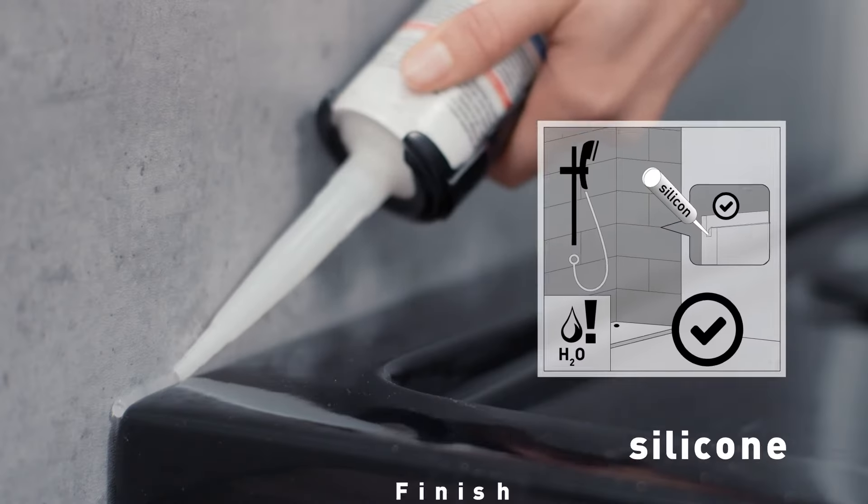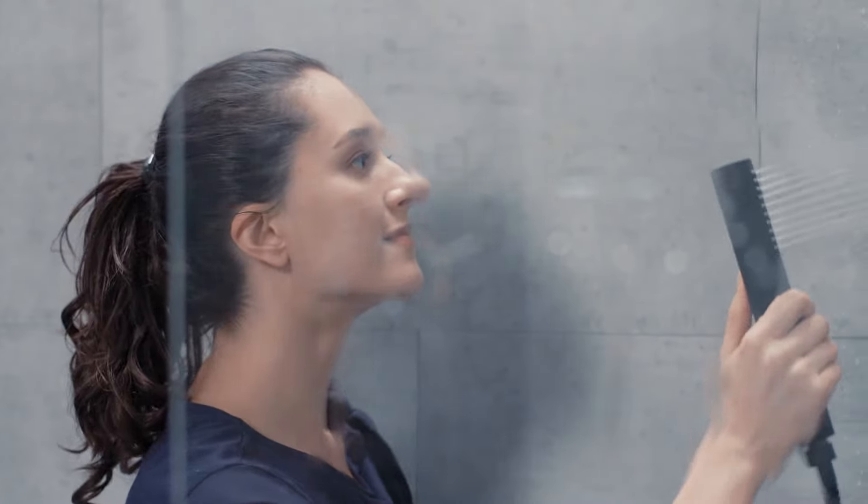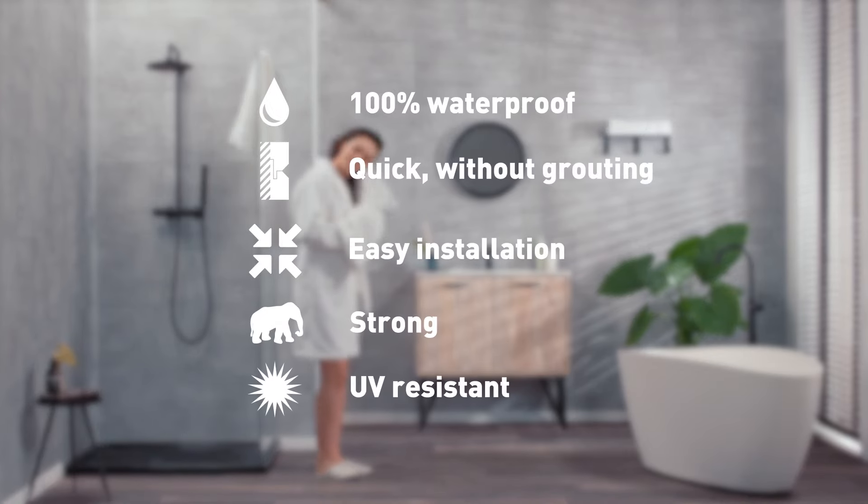In very moist locations like a shower or bathroom, a small strip of silicon between the tiles themselves and between the tiles and the profiles is sufficient to ensure that the joints are waterproof. All our tiles are UV resistant and waterproof.